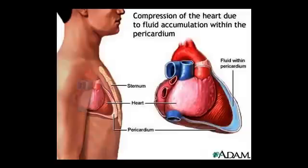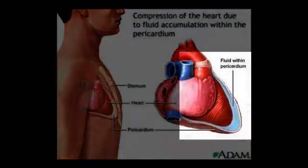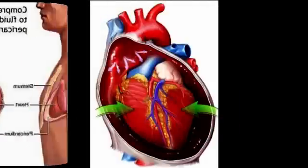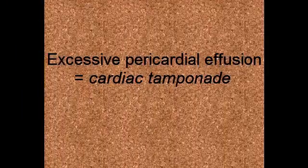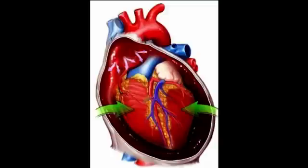In cardiac tamponade, fluid accumulates in the pericardial space. The fibrous pericardium is not stretchy — it's not going to keep expanding. So the pressure goes onto the heart, starting to smother it and impair its ability to contract and pump. The fluid compresses the heart inward.